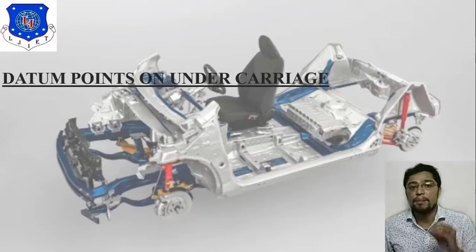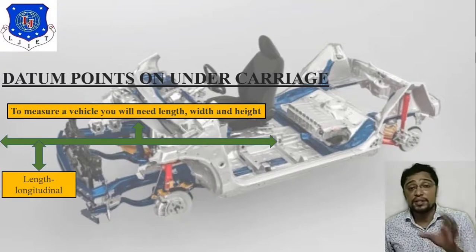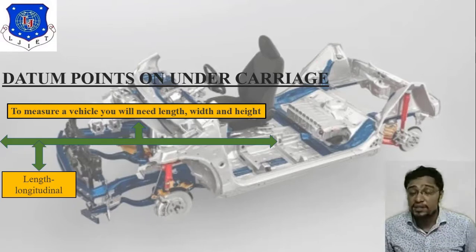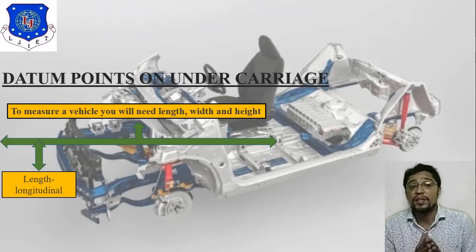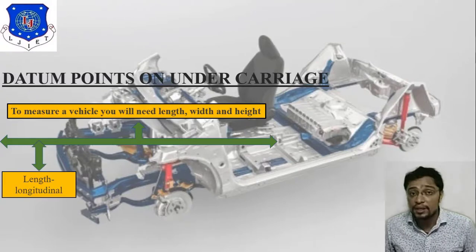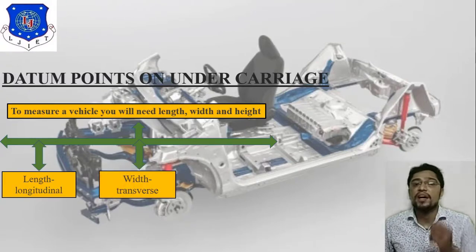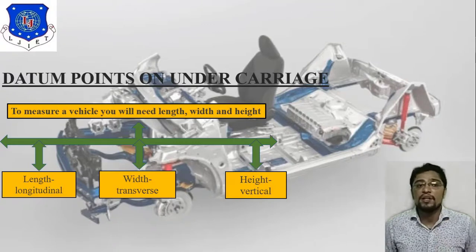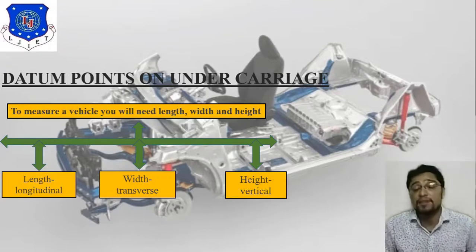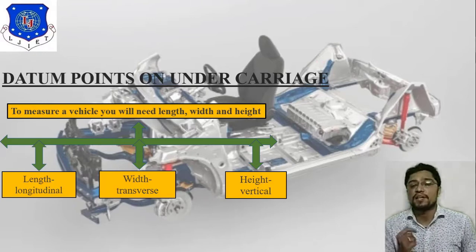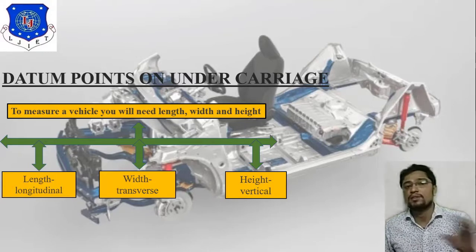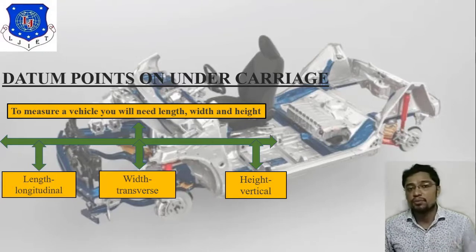Next is datum points on undercarriage. To measure a vehicle you need three parameters: length, which is longitudinal; width, which is transverse; and height, which is vertical. These three parameters — longitudinal, transverse, and vertical — are what you need to consider when working with datum points on the undercarriage.